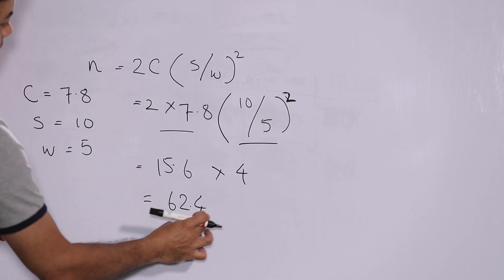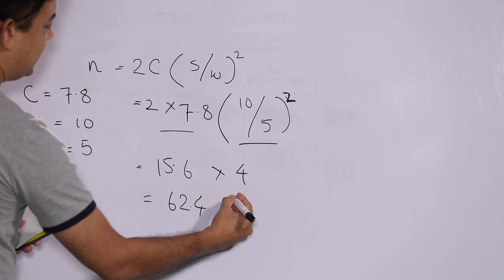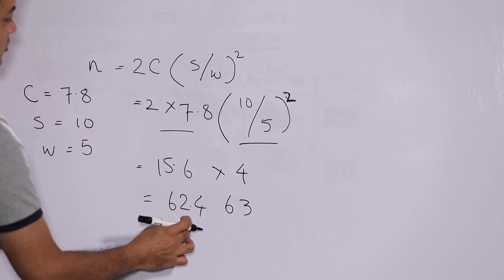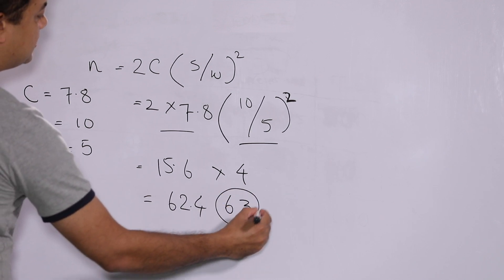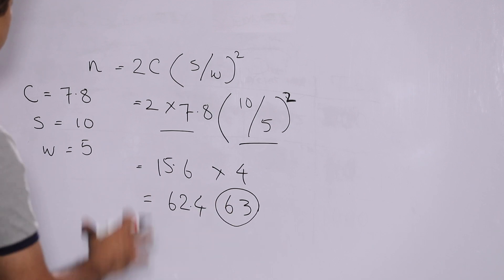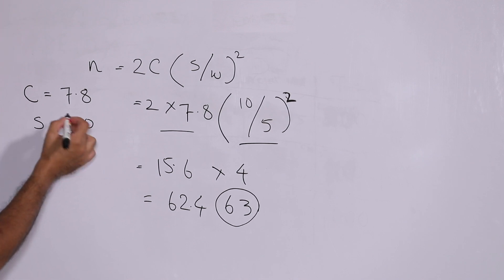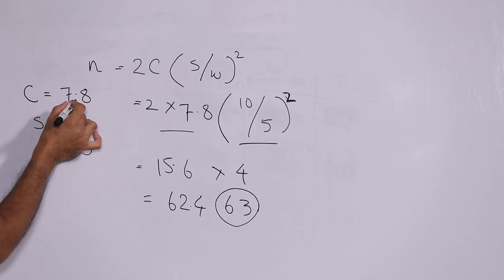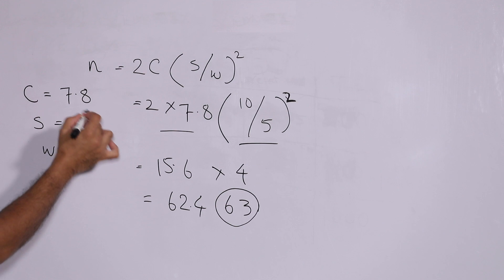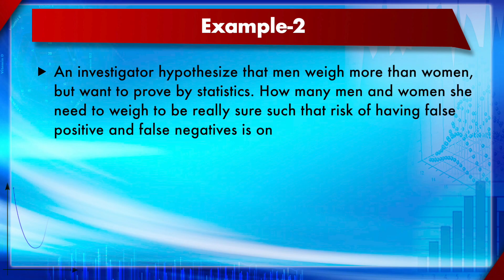That gives us 15.6 × 4 = 62.4. Whenever a fraction comes up, we always round up to the next integer — so 63. We go with 63 rather than 62 because with fewer samples you might end up short. So 63 is the number of samples required per group to detect an effect size of 5 mmHg, given 80% power, 95% confidence, and expected standard deviation of 10 mmHg.